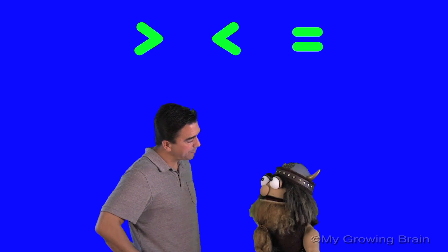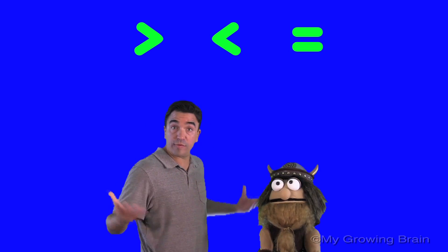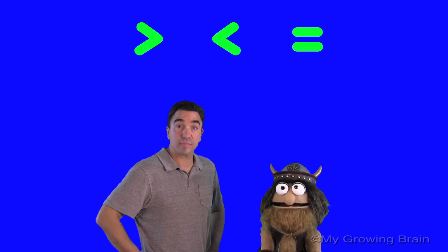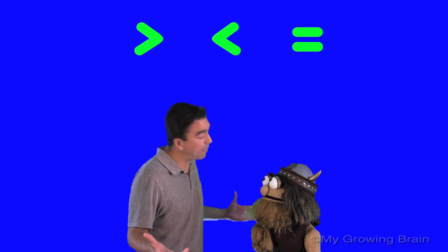Coach Mike? Yeah? I remember what the equal sign is for. Oh yeah? Well, what's it for, Olik? Well, it's used to show that two things are equal to the same amount. That's correct. Can you think of an example?